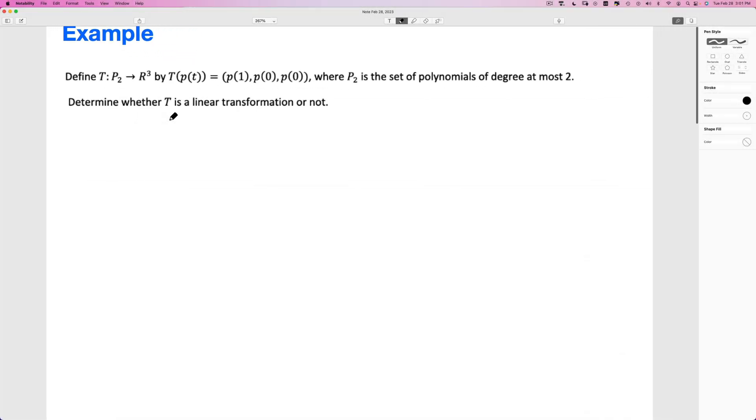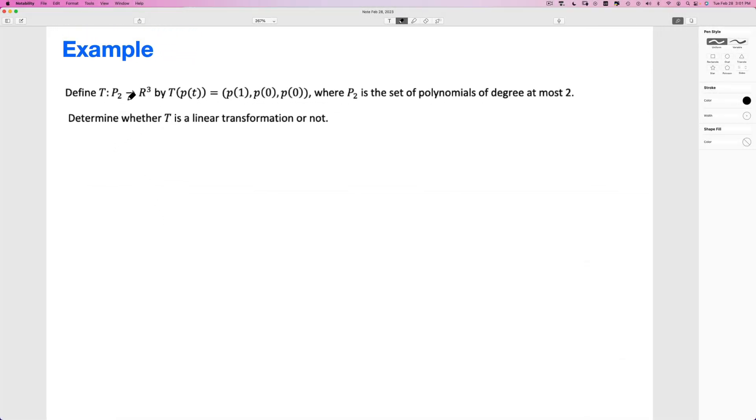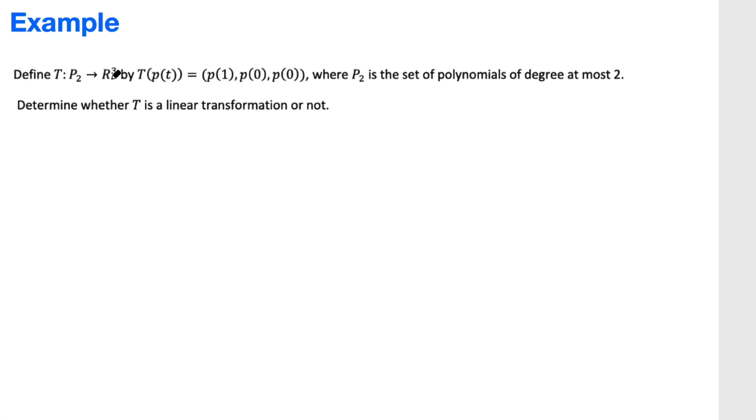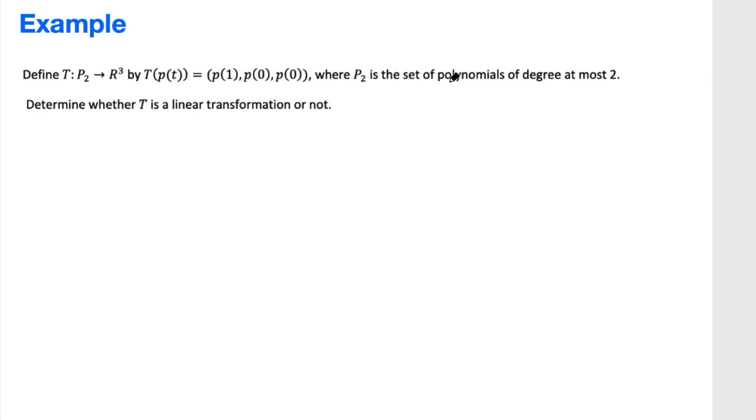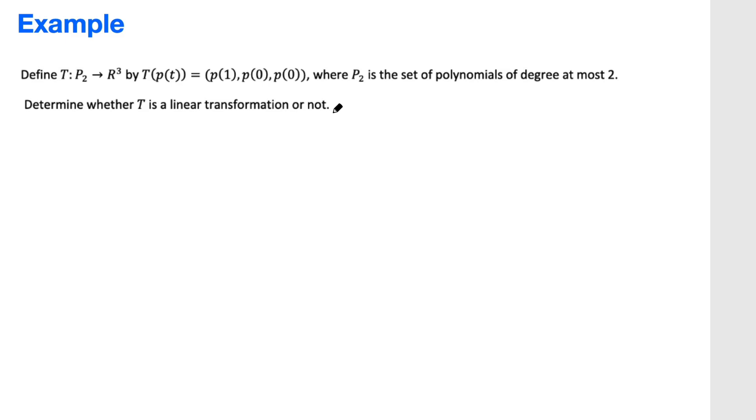Okay, let's consider the following example. Define a function from P₂ to R³ such that T of P₂ is P₁, P₀, P₀, where Pₜ is the set of polynomials of degree at most 2. Determine whether T is a linear transformation or not.